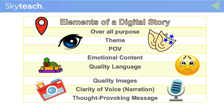For example, it could be child labor, gender discrimination, girls' education, etc. Once the theme is decided, the next thing is POV. Students need to find out whether they want to narrate the story in first person pronoun or third person pronoun.